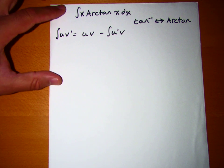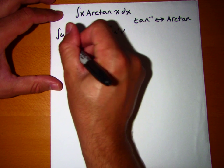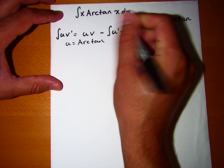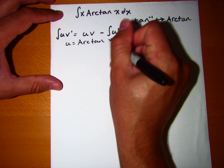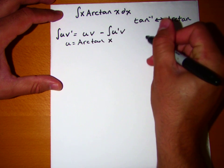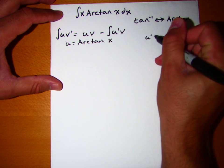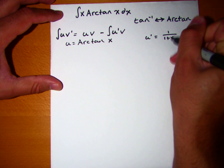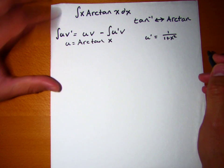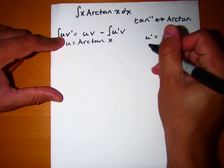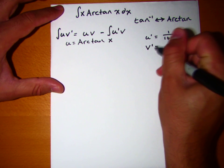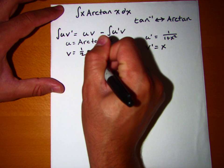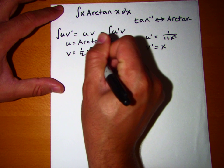Well in this case, I think if we say u is equal to arctangent x, well then that means u', as we know, is equal to 1 over 1 plus x squared. And then I'll say that v' is equal to x, in which case v is equal to 1 half x squared.